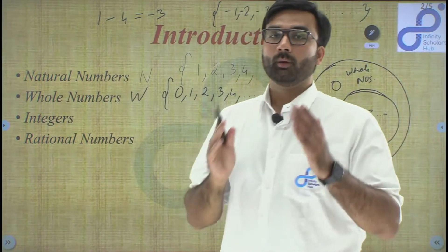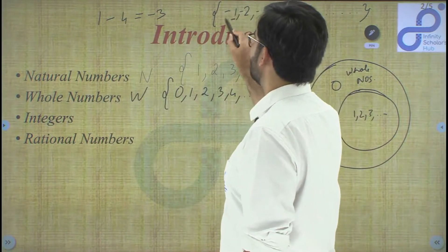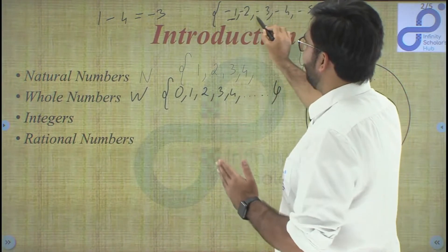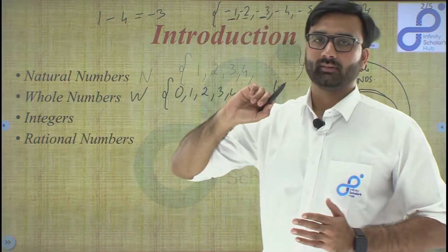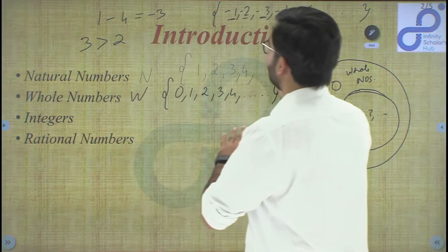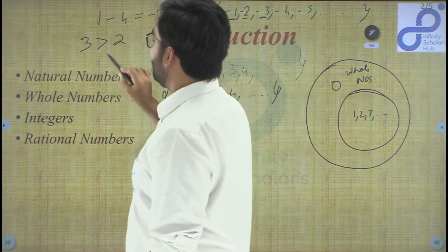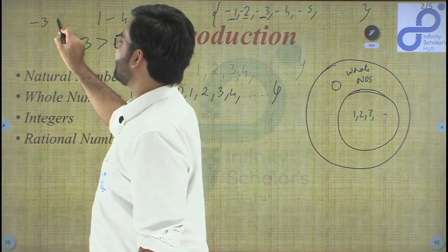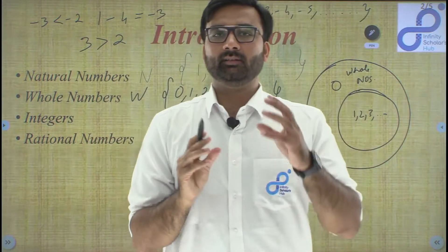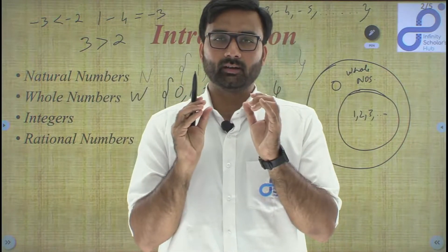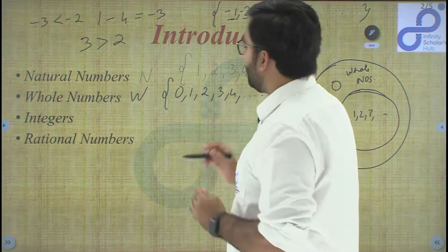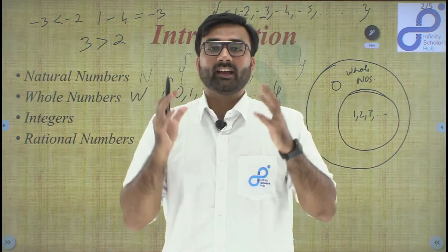The greatest negative integer is minus one. On the negative side, whichever numerical value is greater, that number is actually smaller — for example, minus three is less than minus two, even though three is greater than two. When we combine the group of negative numbers and whole numbers, we get a whole new group called integers.